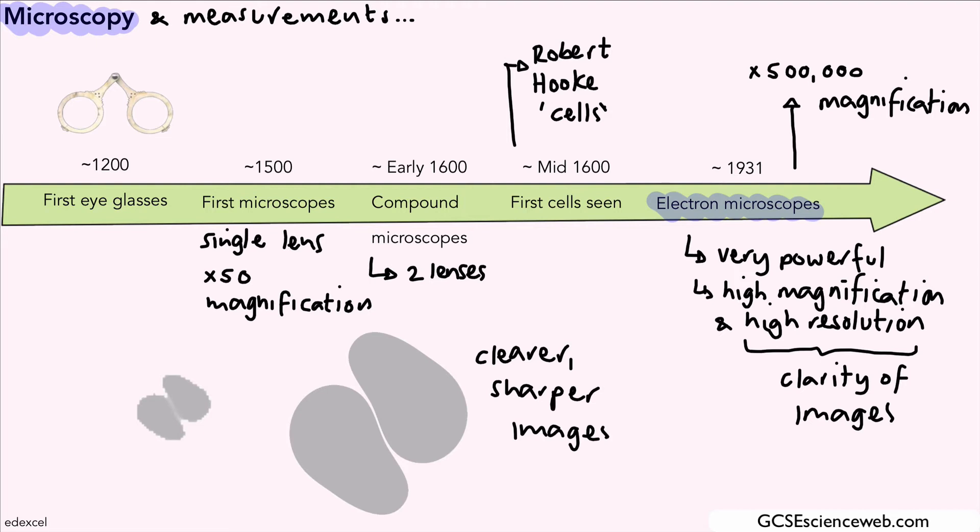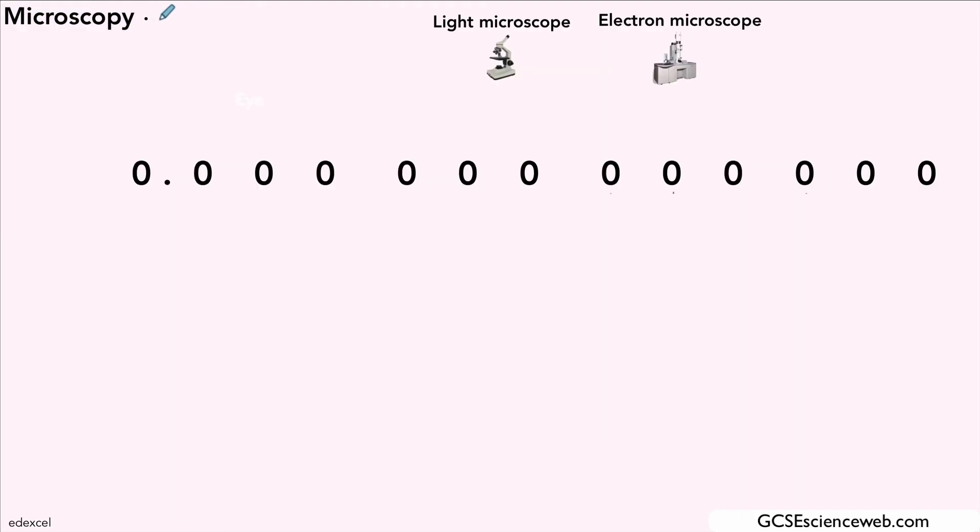But what we want to look at now is the kind of units that we use when we're dealing with objects that we see under a microscope. On the screen there, I've got a bunch of zeros with a decimal place just to give us an idea. You'll see how that works in a minute.